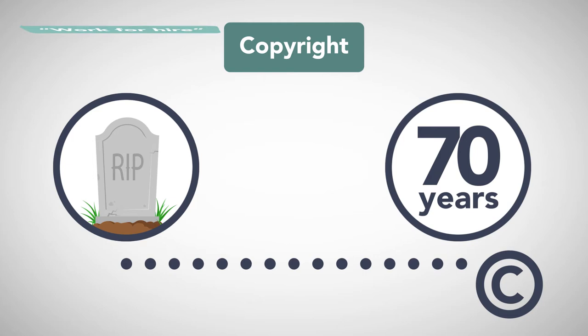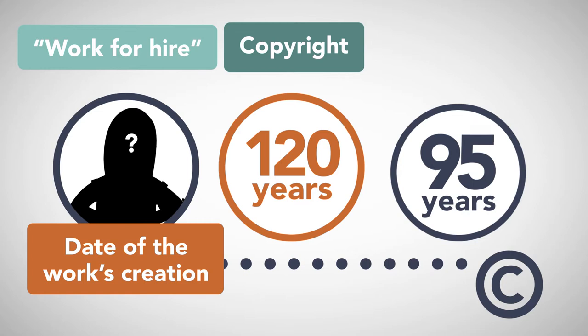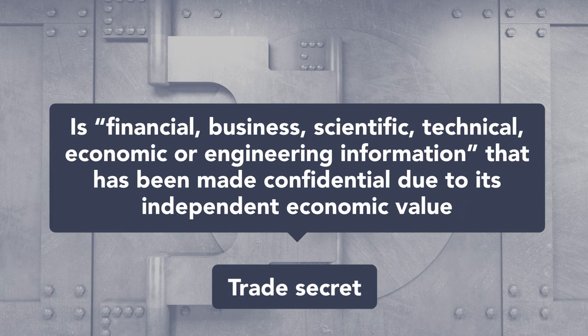Copyrights last until 70 years after the death of the author. If the work is created under a work-for-hire arrangement or anonymously, the copyright lasts 95 years from first publication of the work or 120 years from the date of the work's creation, whichever is shorter.